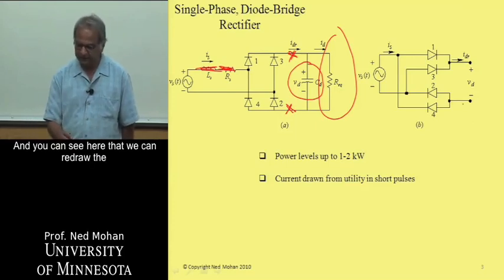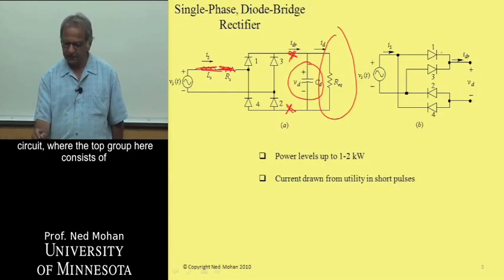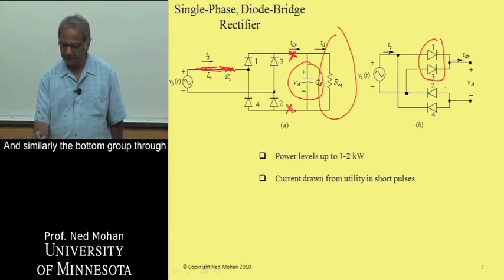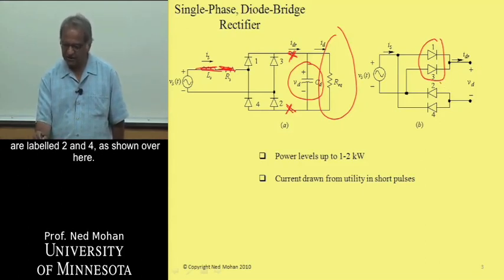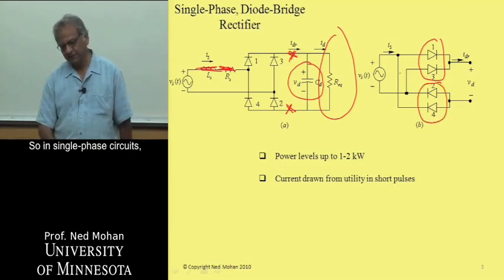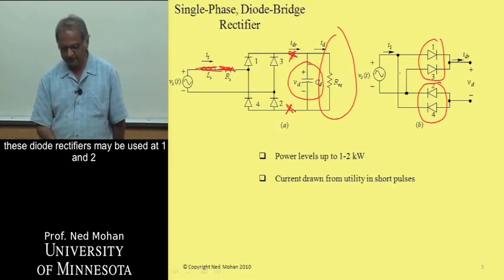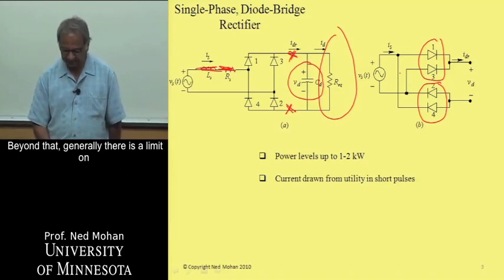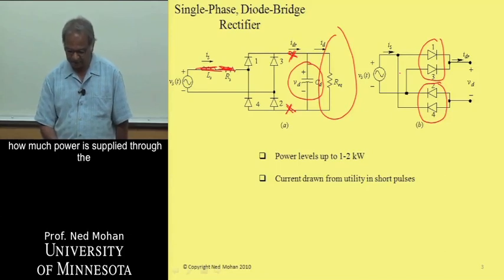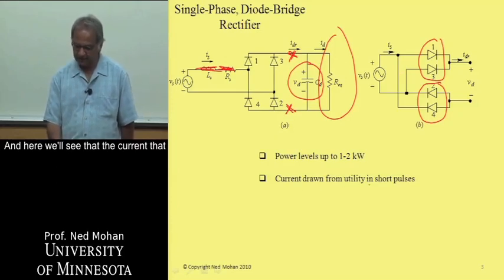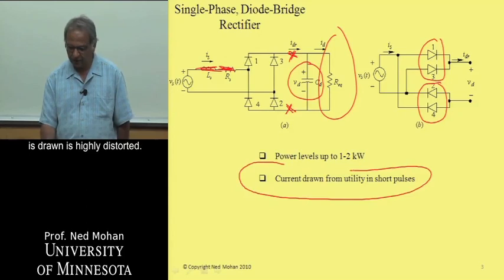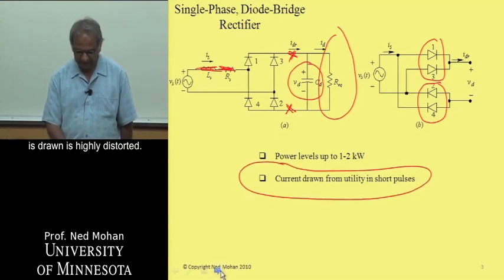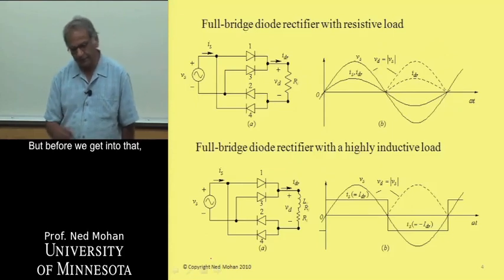We'll look at this four diode circuit between these two points on the DC side. You can see here that we can redraw this circuit where the top group consists of diodes one and three, which are labeled on the left, and similarly, the bottom group through which the current returns are labeled two and four. In single phase circuits, these diode rectifiers may be used at one or two kilowatt power level. Beyond that, generally there is a limit on how much power is supplied to the outlets of single phase circuits. And here we'll see that the current that is drawn is highly distorted.